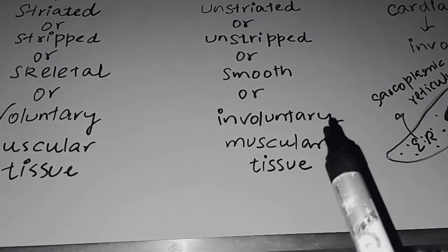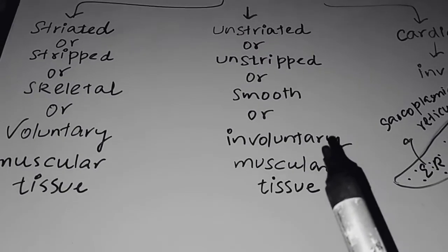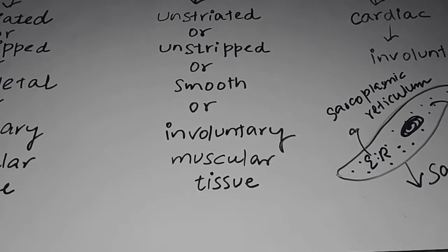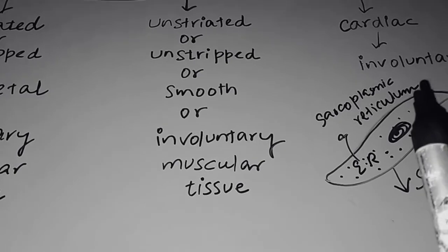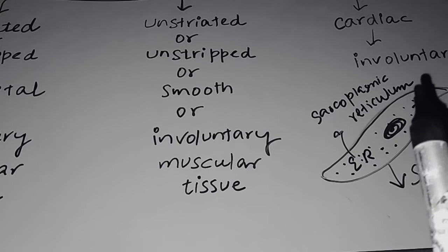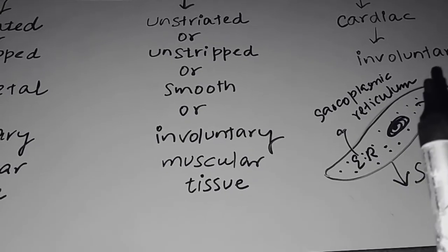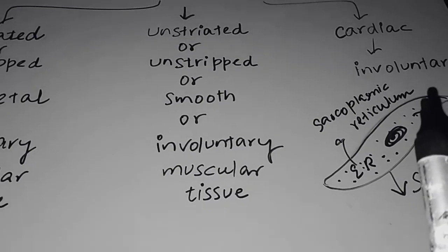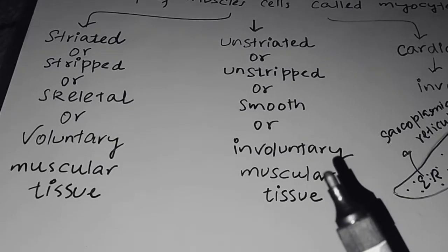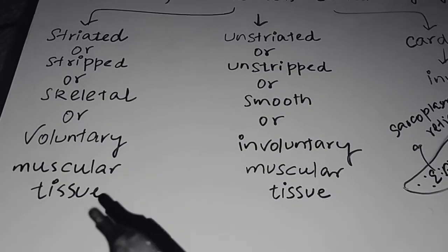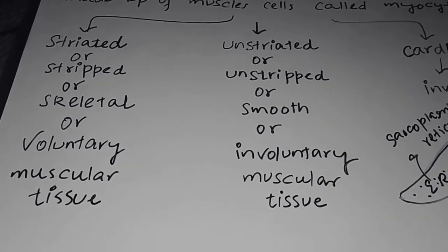Next is cardiac. It forms the muscle of heart, cardiac muscle or heart muscle. This also does not work according to our will. The heart beats continuously 24 hours without involving the will of an organism. That's why it's called involuntary. We will discuss these muscular tissues in detail, I mean why they are called striated or unstriated and all that in coming lecture. Thank you.